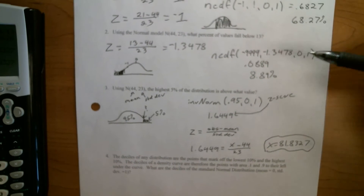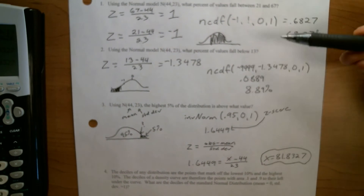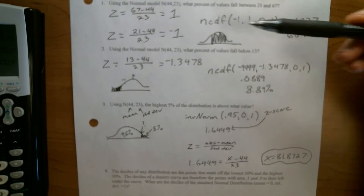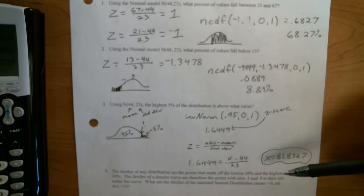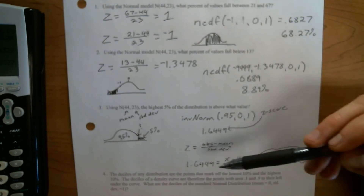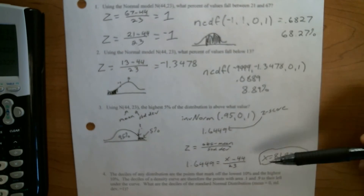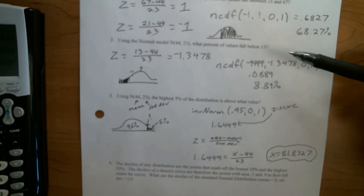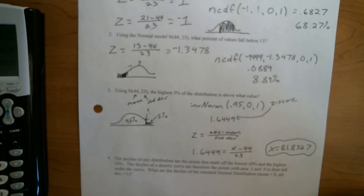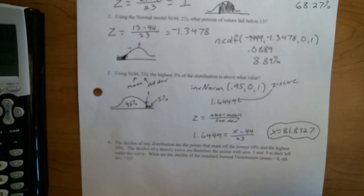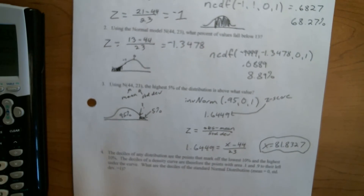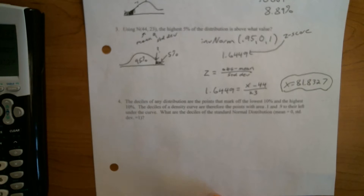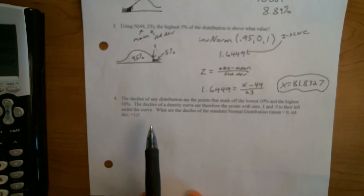So this is the basics — making sure that you know how to use NCDF, and how to go back and forth between Z-scores and values. This is the sort of stuff that you're definitely going to have to be able to do on a test. Because we have some extra time, I want to do some more involved stuff to show you what else is possible with these things.